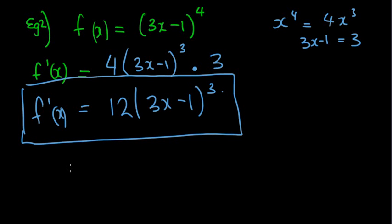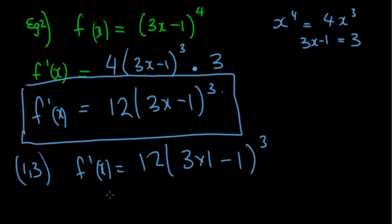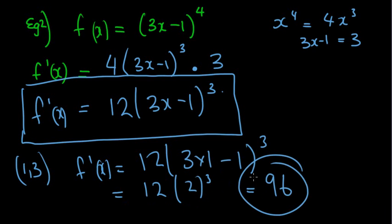Because, you know, I might then get a question. You can remember that we're finding the gradient. This is the rule for the gradient. They might then say, find the gradient of my tangent at the point, let's say, 1, 3. So what I can now then say is f'(x) is equal to 12 brackets 3 times 1 negative 1 cubed. And then for my answer there, so 12 outside of 3 times 1 is 3, 3 take away 1 is 2. So 2 cubed is 8, 8 times 12 is 96. So the gradient at the point 1, 3 would be 96.